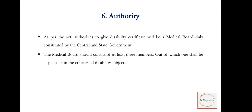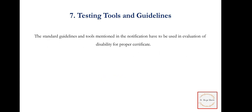The sixth principle is authority — as per the disability act, the authority to give disability certificates will be a medical board duly constituted by the central and state government. The seventh principle concerns testing tools and guidelines — standard guidelines and tools are given for disability evaluation; there is a proper criteria provided for the certificate, so we don't evaluate arbitrarily.